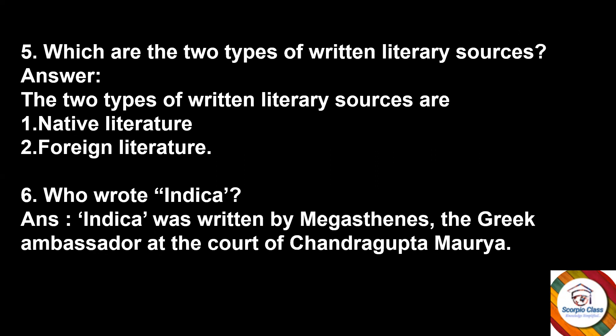Next question: Which are the two types of written literary sources? Answer: The two types of written literary sources are native literature and foreign literature. Next question: Who wrote Indica? Answer: Indica was written by Megasthenes, the Greek ambassador at the court of Chandragupta Maurya. The Indica is the name of the book, written by Megasthenes, the Greek ambassador at the court of Chandragupta Maurya.